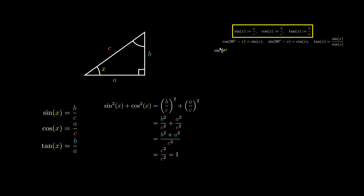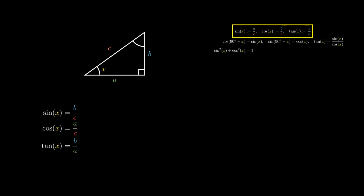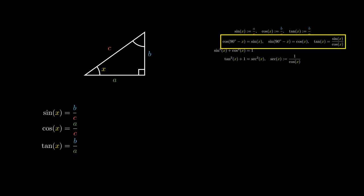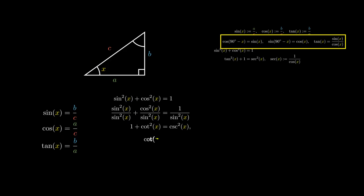This is the first and arguably the most important Pythagorean trigonometric identity. Using this identity, we can divide both sides by cosine squared X. Since sine of X over cosine of X gives us tangent of X, the left expression simplifies to tangent squared X, and on the right-hand side, the secant of X is defined to be 1 over cosine of X. We could instead divide by sine squared X, giving us 1 plus cotangent squared X equaling cosecant squared X, where cotangent of X is 1 over tangent of X, and cosecant of X is 1 over sine of X.